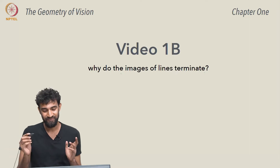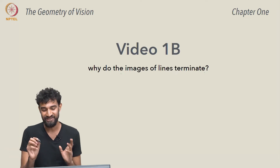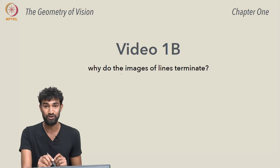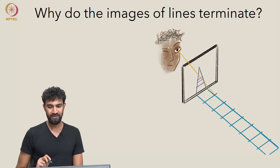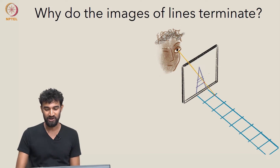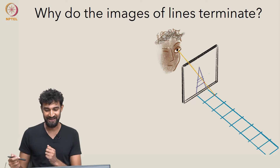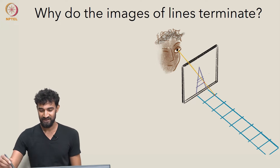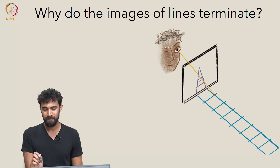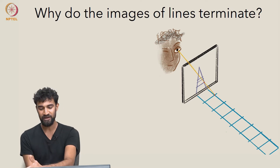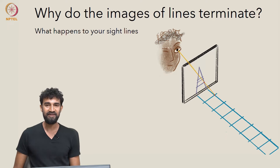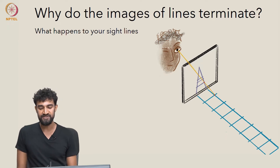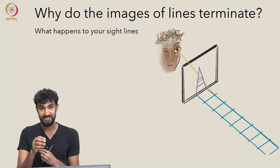Let's answer the question: why do the images of lines terminate? To do that, let's go back to our setup — our framework with the picture plane, our sight lines, an infinitely long railway track, and the image of that railway track on the picture plane. Let's observe what happens to your sight lines as you look further and further down along the railway track.